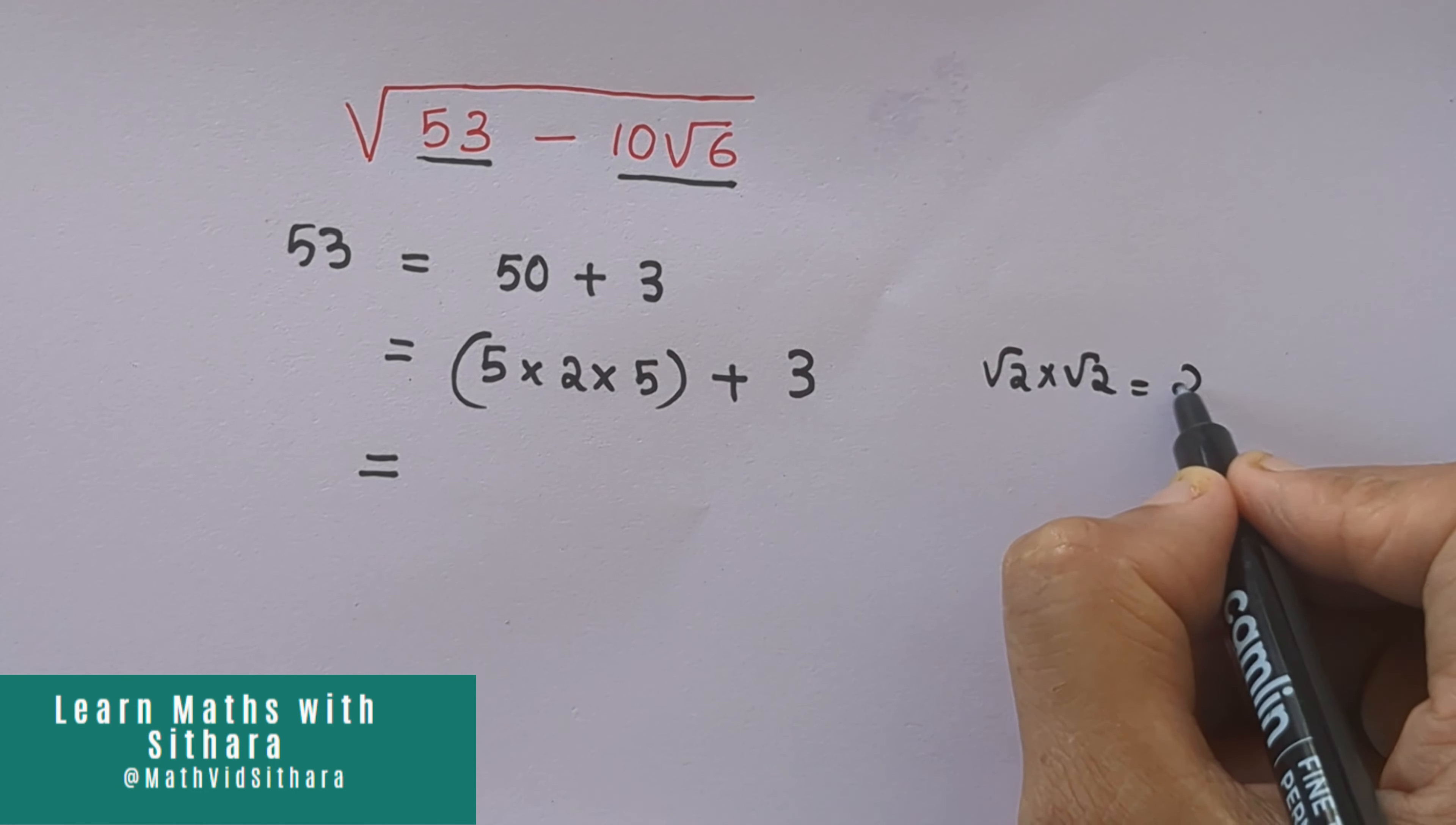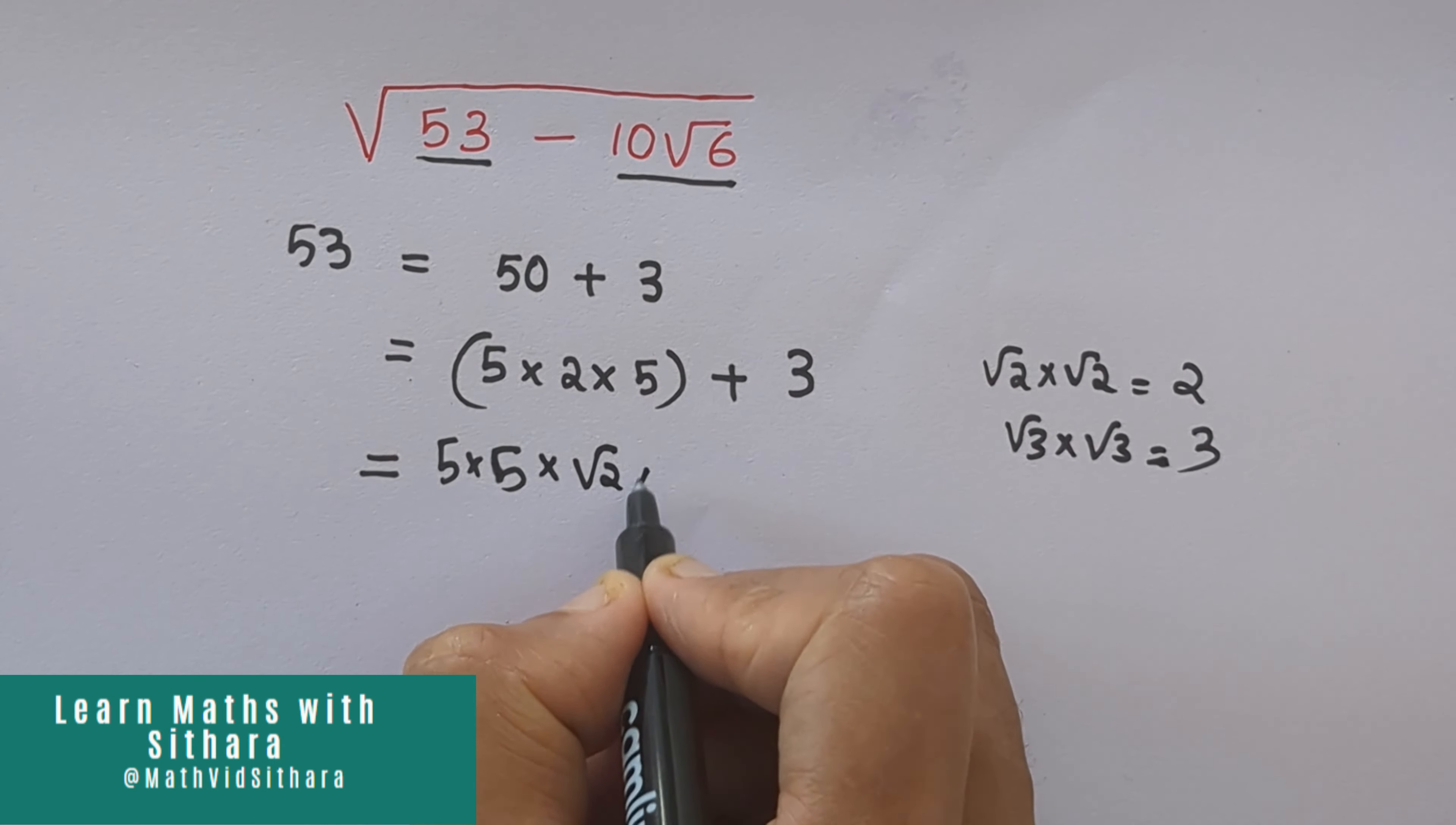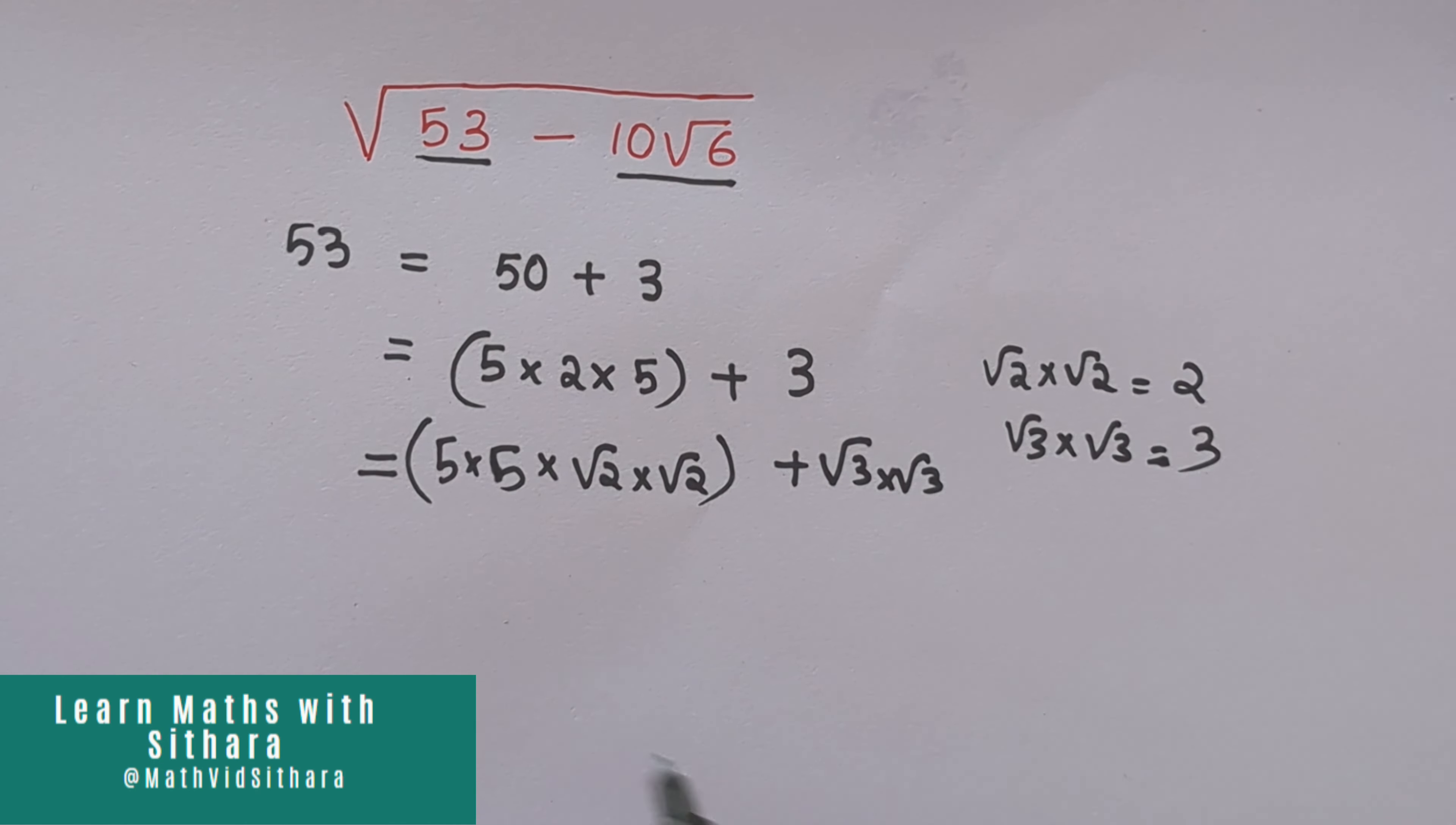We know that root 2 into root 2 equals 2, and also root 3 into root 3 equals 3. So we get 5 into 5 into root 2 into root 2 plus root 3 into root 3. So here there are two 5s and two root 2s, so we can write 5 root 2 the whole square plus root 3 the whole square.